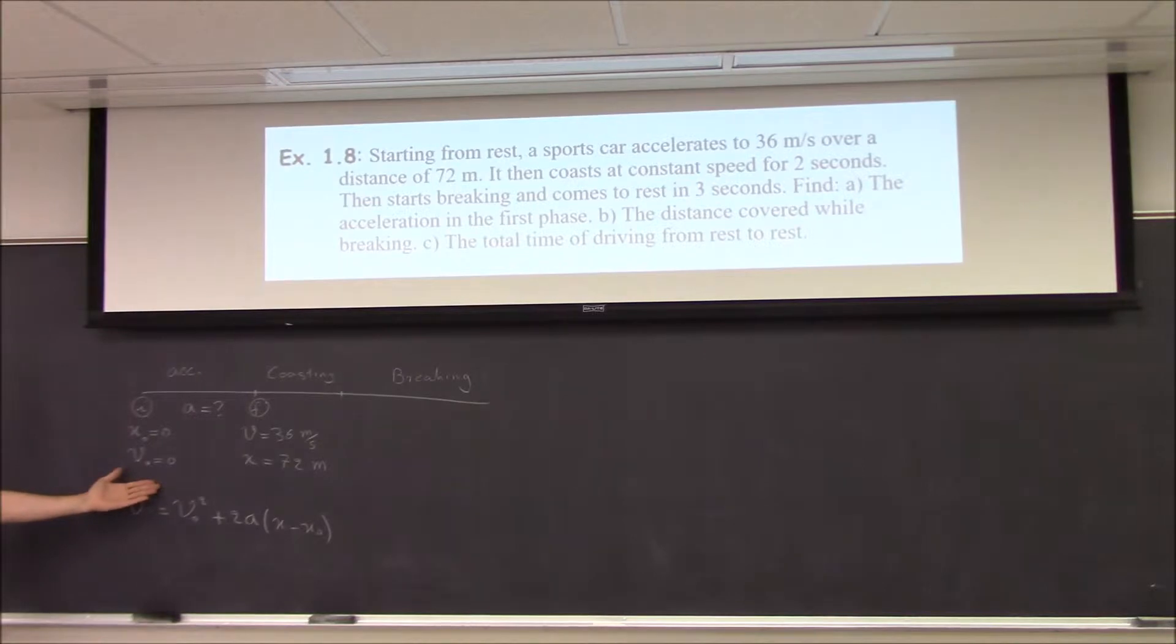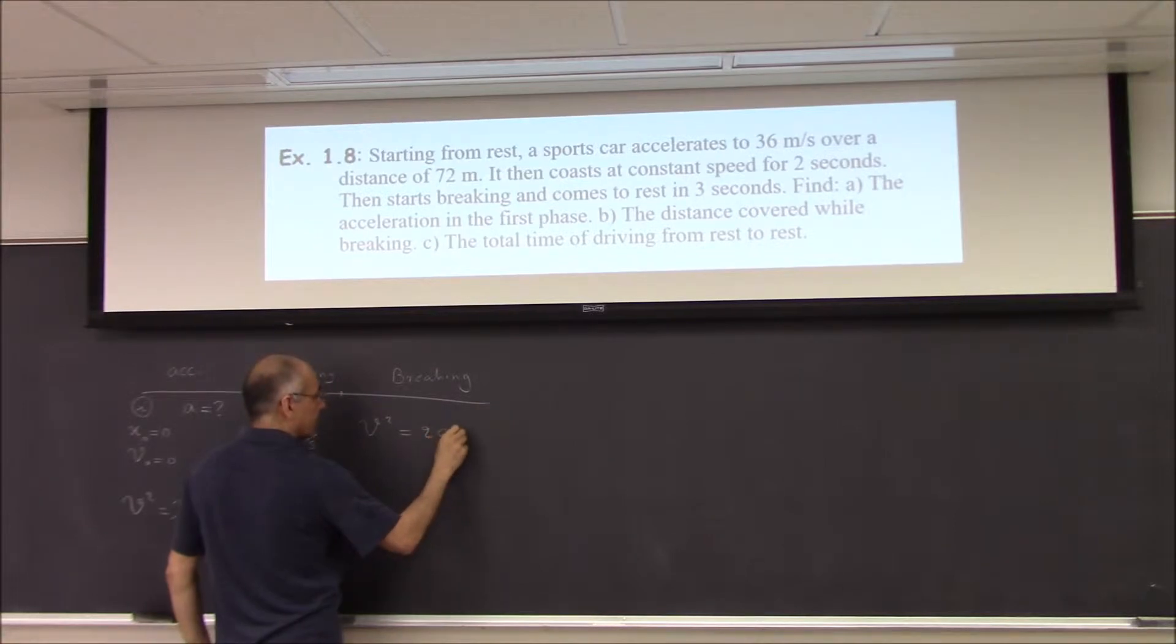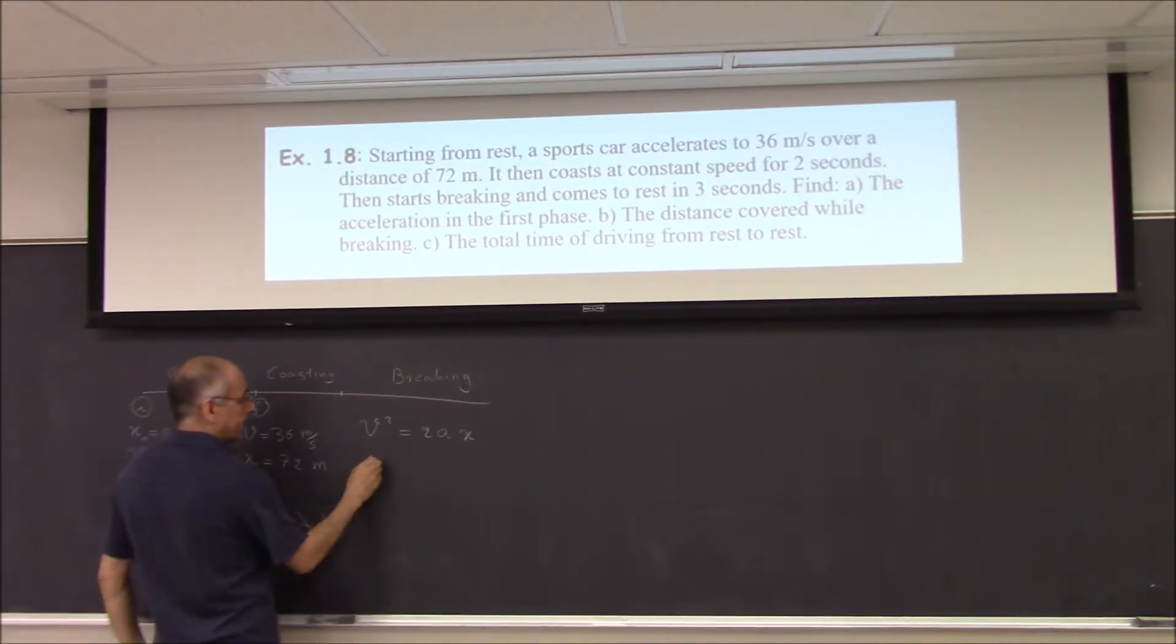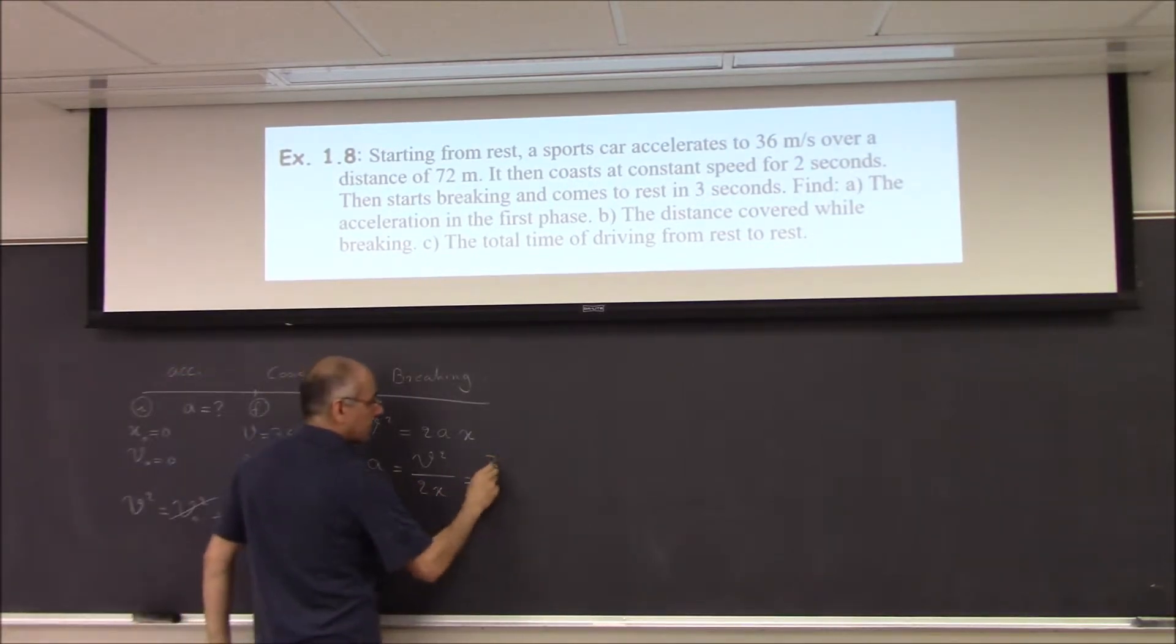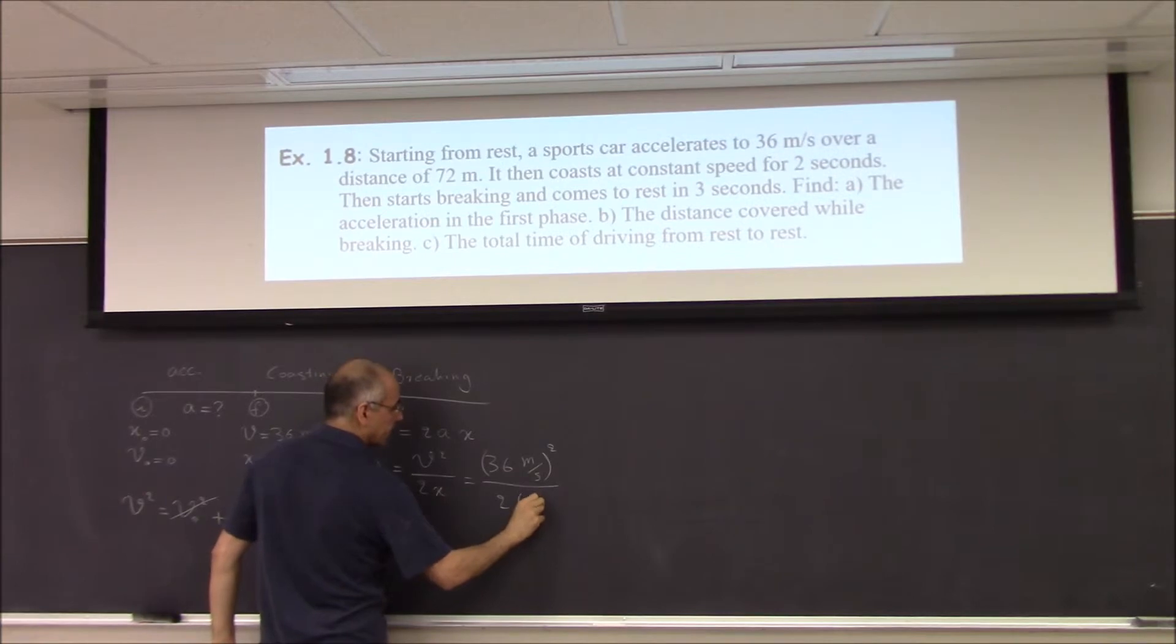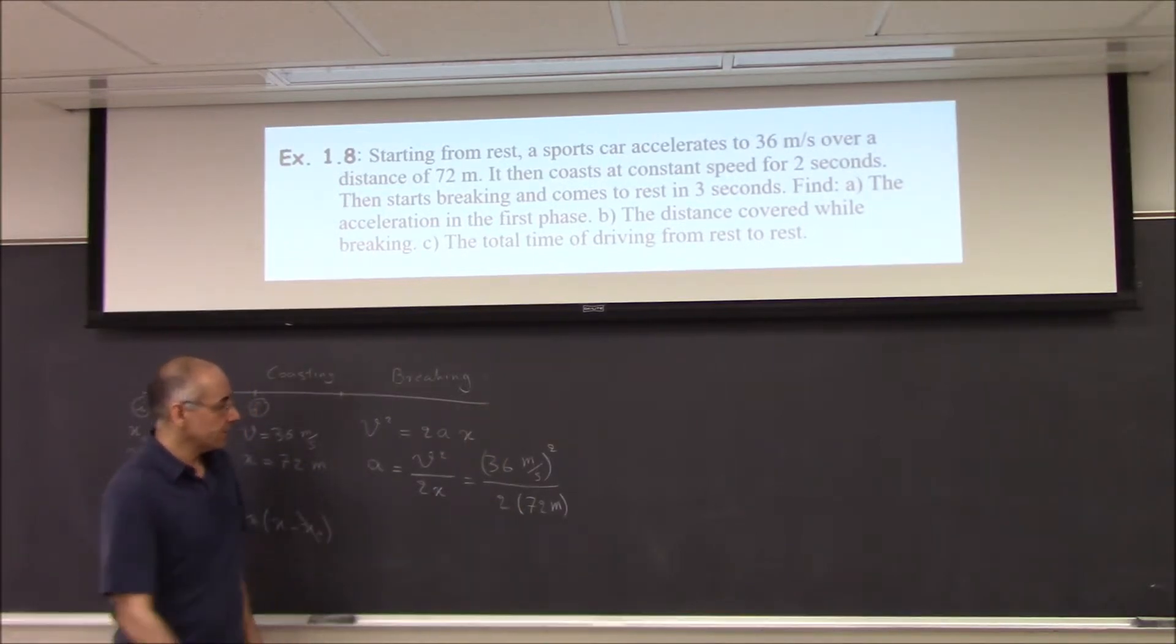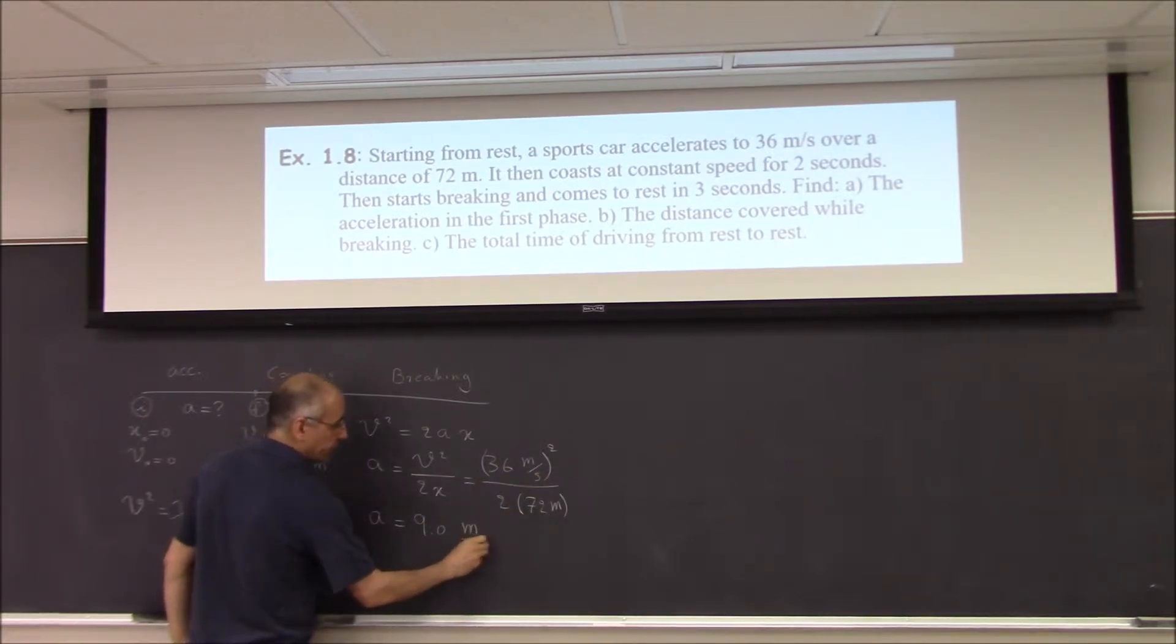We will solve the problem. And then, throw away whatever is 0. So, this v0 is 0, x0 is 0, so this reduces to v squared equal to 2a times x, and solve for a. You want to find a, right? So, solve for a. a is v squared over 2x. That's 36 meters per second squared, divided by 2 times 72 meters, right? If you copy it, 36 squared, divided by 2 times 72, that's 9 meters. This is meters squared per second squared, divided by meters, becomes meters per second squared.